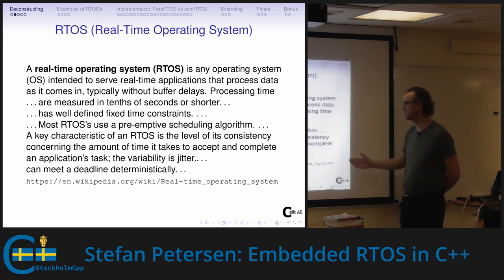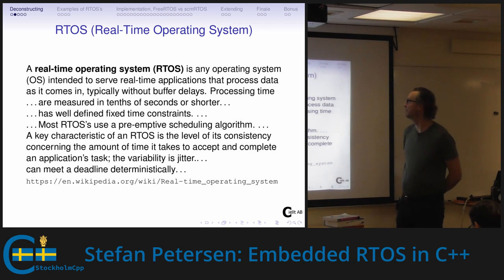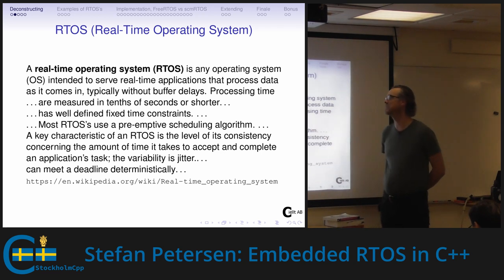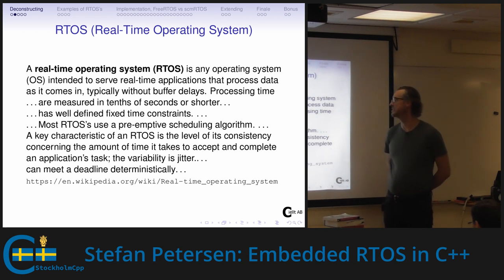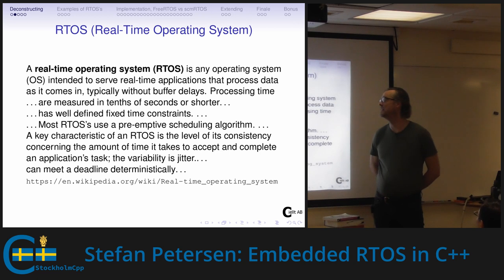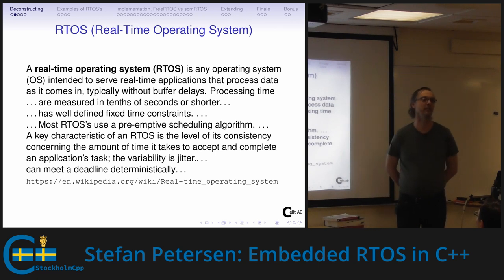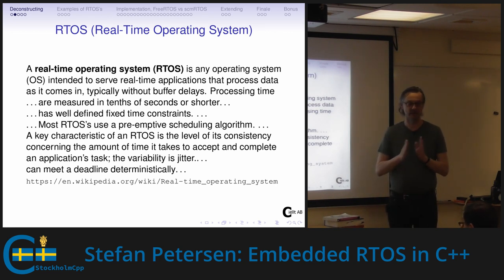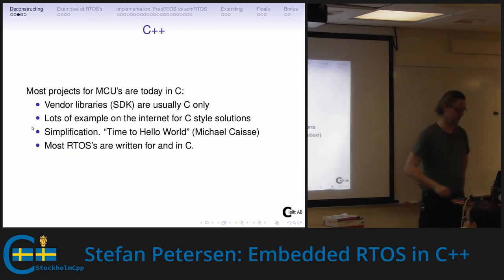A real-time operating system — from Wikipedia — means processing without buffer delays, with processing times measured in tens of milliseconds and well-defined fixed time constraints. The key characteristic is consistency in the time it takes to accept and complete a task. An RTOS does not have to be fast in general, but it has to do its work in a consistent time — if that time varies, it's not real-time anymore.